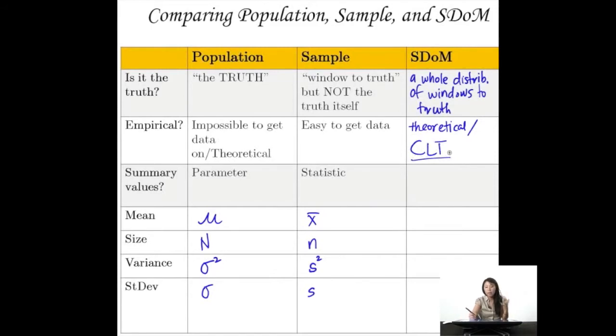Right? Those principles help us know what the SDoM looks like. And instead of calling them parameters or statistics, what we call them is expected values, just like probability distributions. They're both theoretical distributions of samples. And instead of calling it mu or x-bar, it's the window, it's the distribution of windows to the truth, so it's the mu of a whole bunch of x-bars, right?